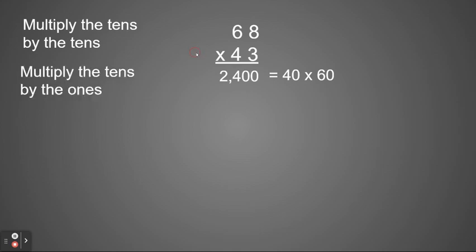Now we're going to multiply through the bottom 10 with the top ones place. So 40 times 8. 4 times 8 is 32. So 40 times 8 is 320.